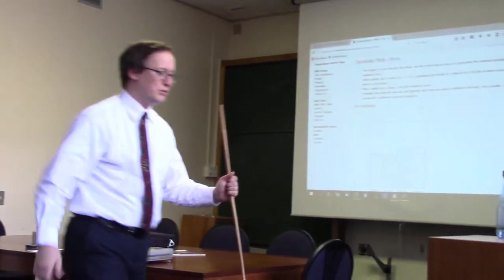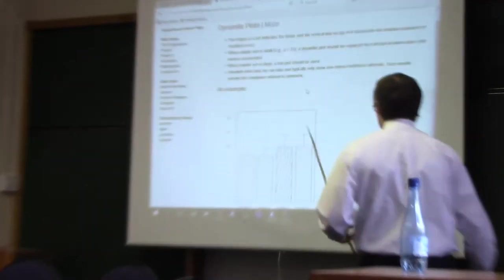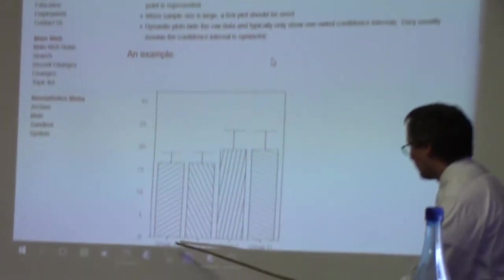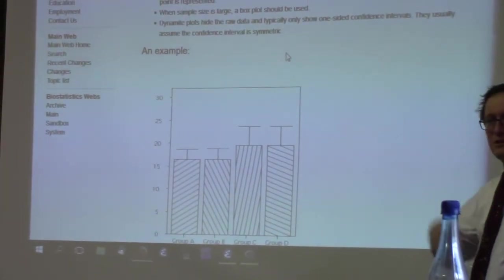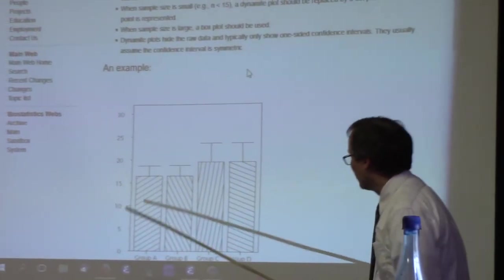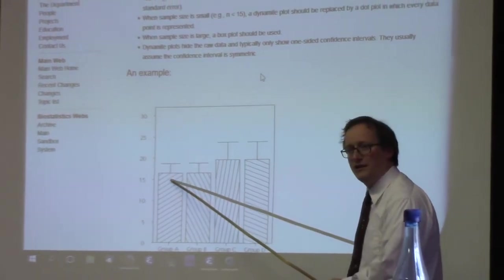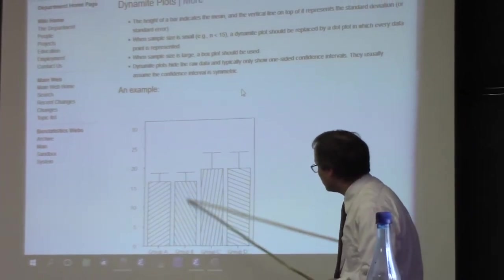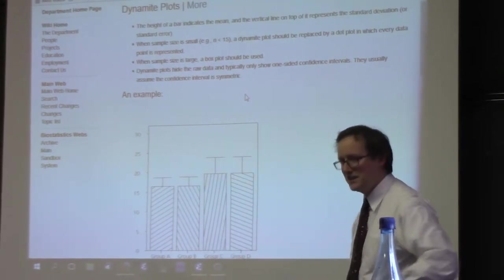And the visualization that I'm complaining about today is the dynamite plot. I have an example here on the board. I want to explain the origin of the term. Here we have four different groups, A, B, C, and D. There were some replicate measurements in each. And we have a bar representing the average height for group A and the average height for group B and C and D.